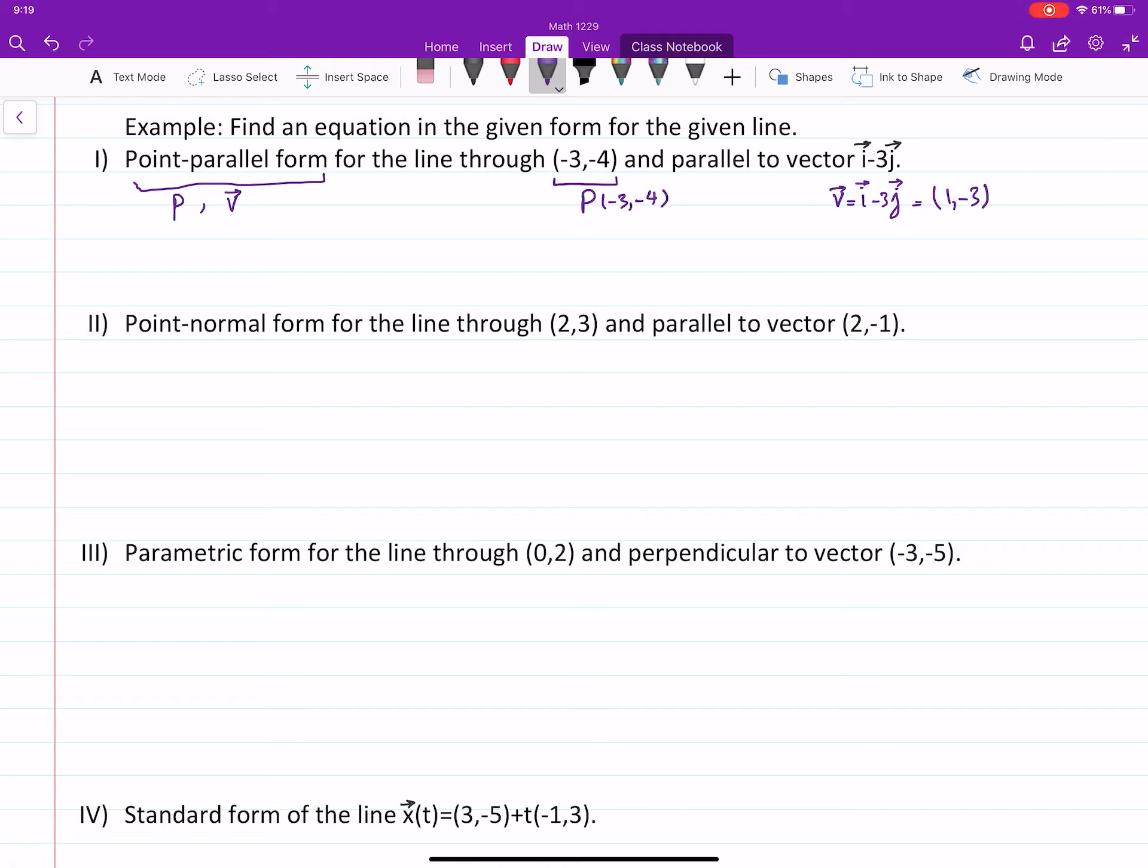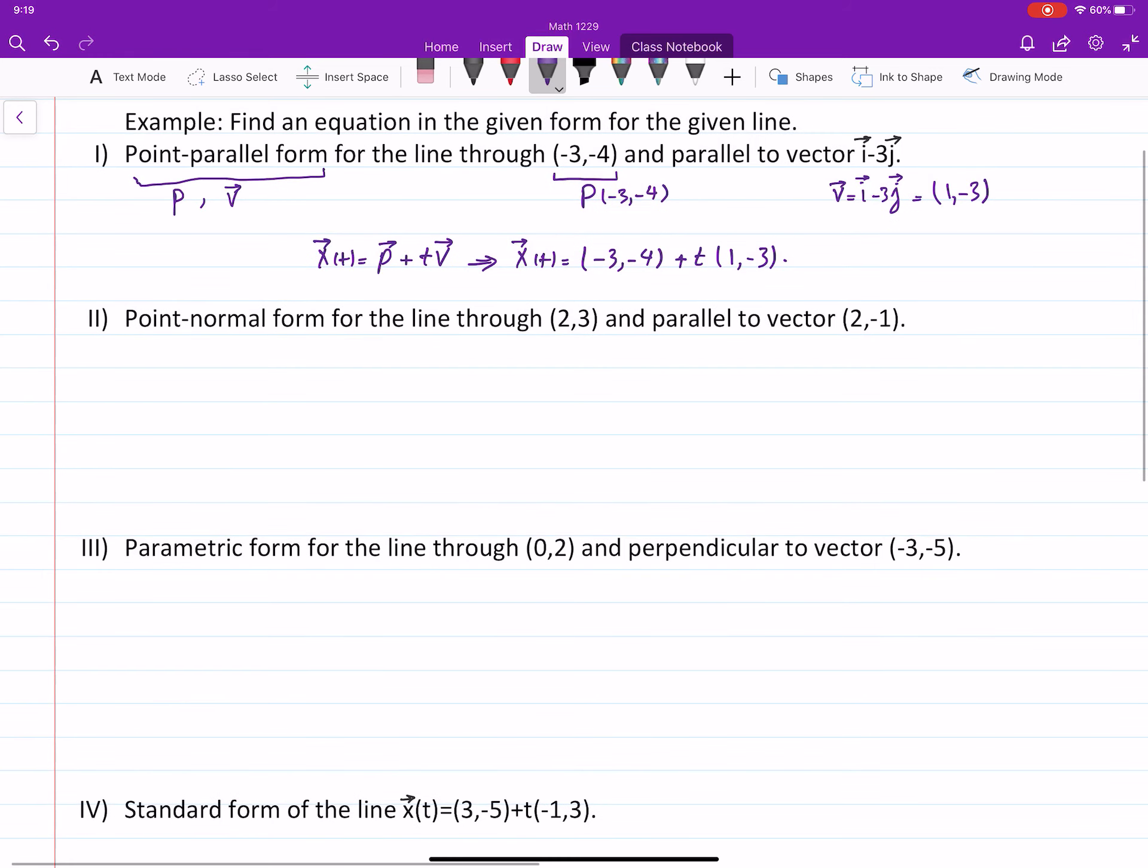When we are in R2, we change IJ form into a vector with two coordinates, with two components. Well, then we have P and we have V, so then this is the form of point parallel, P plus TV. And in this case, it means that we have negative 3, negative 4, plus T times 1 and negative 3. That's the first part.